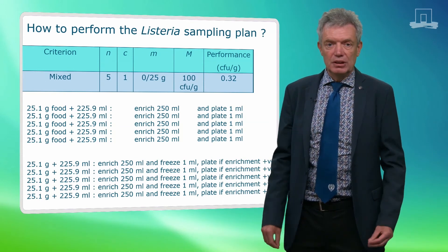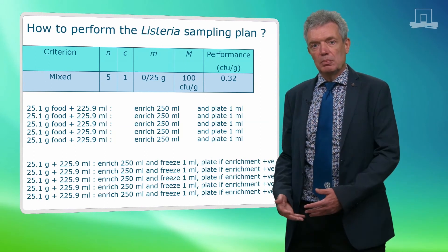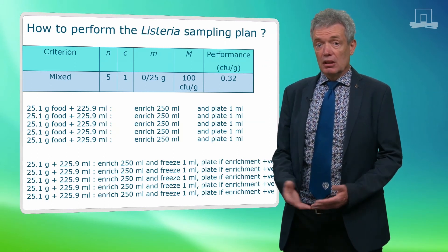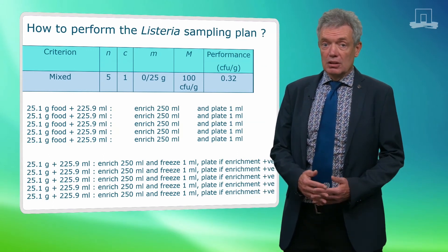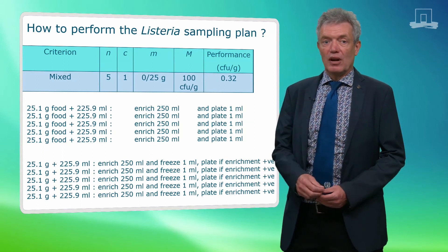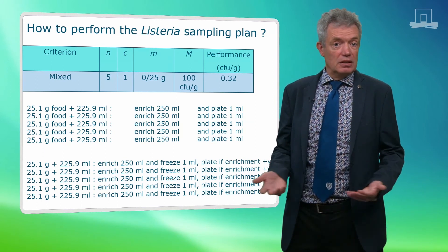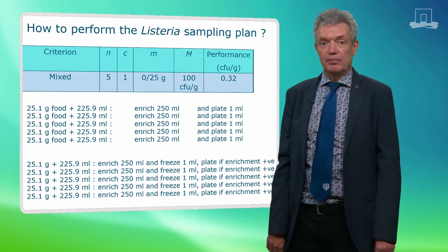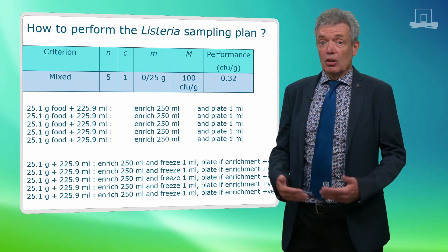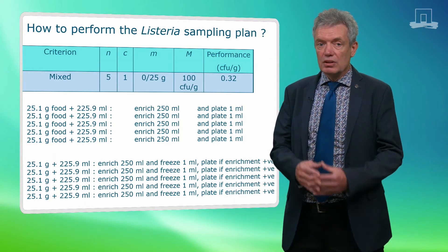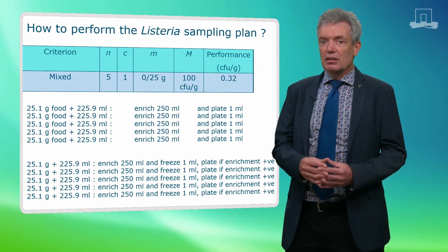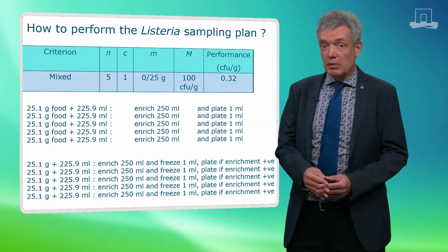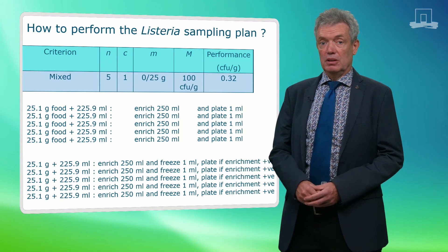Another possibility is to freeze the 1 ml samples, and only plate that sample if one of the enrichments is positive. This saves time and material, since in most cases all of the five samples will be negative, and further testing is not necessary, since then the criterion is complied with anyway. This approach also saves time and material when more than one sample is positive, since then the criterion is surpassed anyway, but it costs more time in case exactly one enrichment is positive.